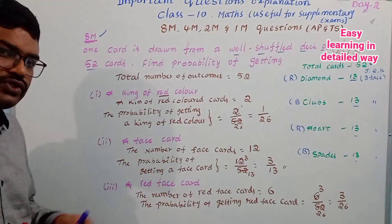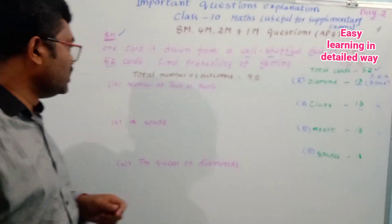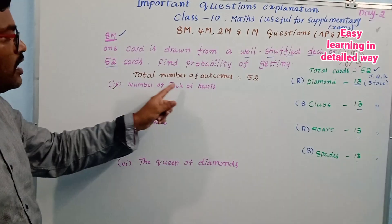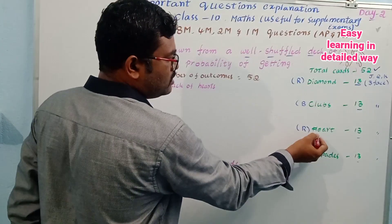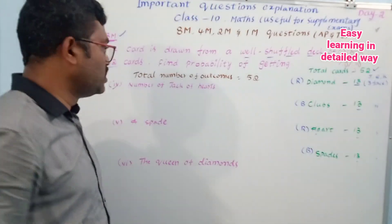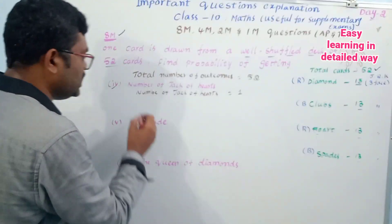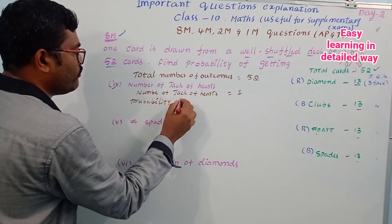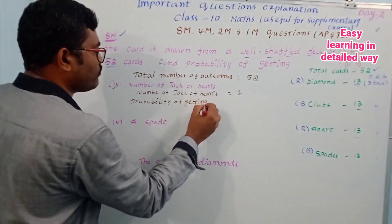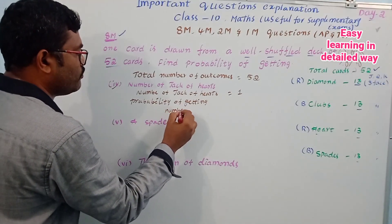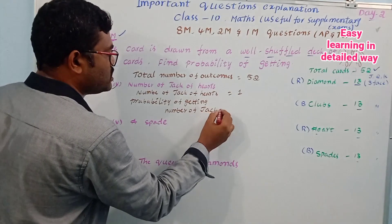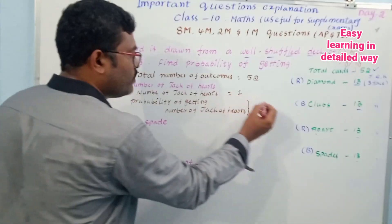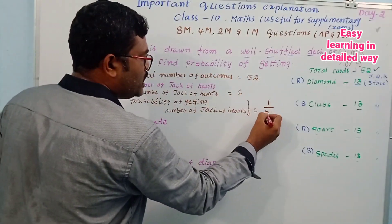Now see the fourth one: the number of jack of hearts. See, probability of getting a jack of hearts — so favorable outcomes are 1 by total outcomes 52.